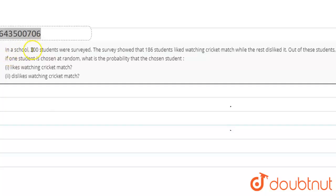Question says that in a school, 300 students were surveyed. The survey shows that 186 students like watching cricket match, while the rest dislike it. Out of these students, if one is chosen at random, what is the probability that the chosen student likes watching cricket match, and second, dislikes cricket match?